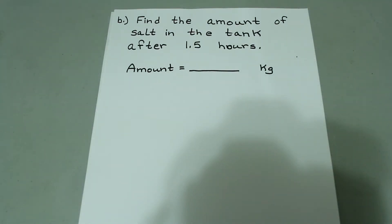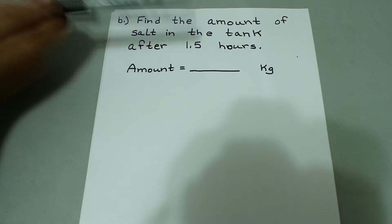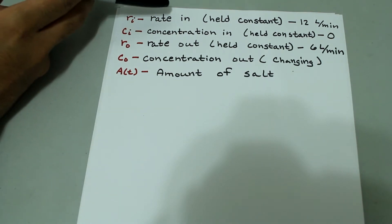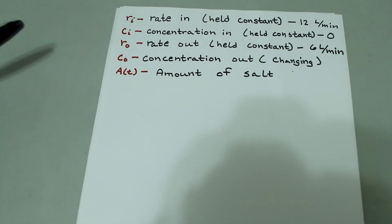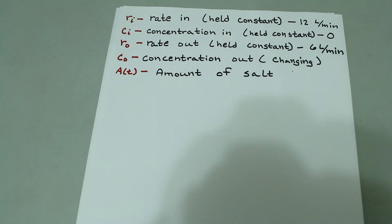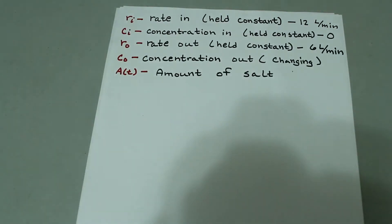Now question B actually requires some calculation. Find the amount of salt in the tank after 1.5 hours, and the amount is going to be in kilograms. Before we solve the problem, I wanted to define a few terms. So r sub i, we'll call that the rate in, which is constant and we know that's 12 liters per minute. The concentration in is also held constant, but it's zero because the solution coming into the tank is pure water, meaning there is no salt.